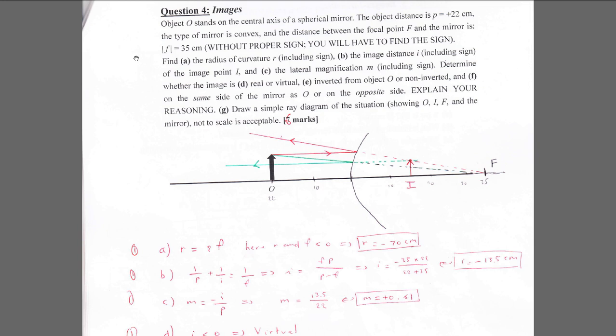They don't give you the sign, so find the radius of curvature including sign. Since it is a convex mirror, by convention the radius is negative, and since R equals 2f, f will also be negative. So f equals negative 35 cm, giving a radius of negative 70 centimeters.